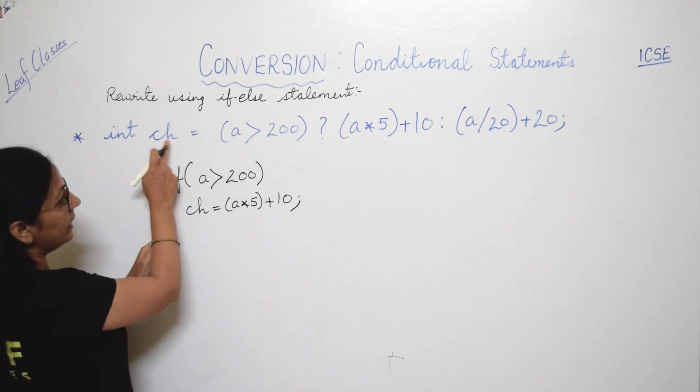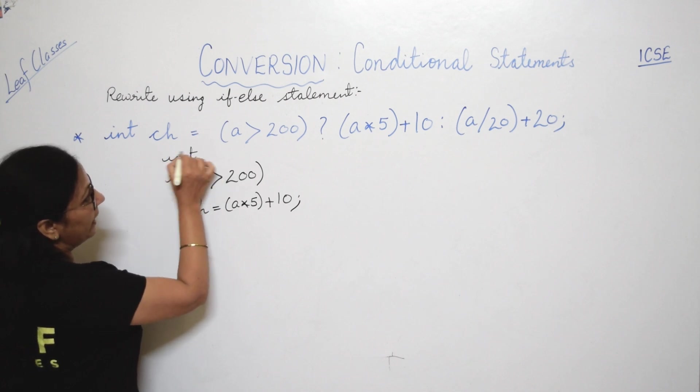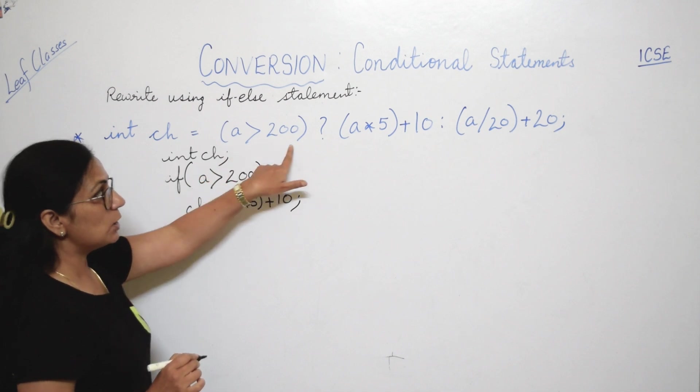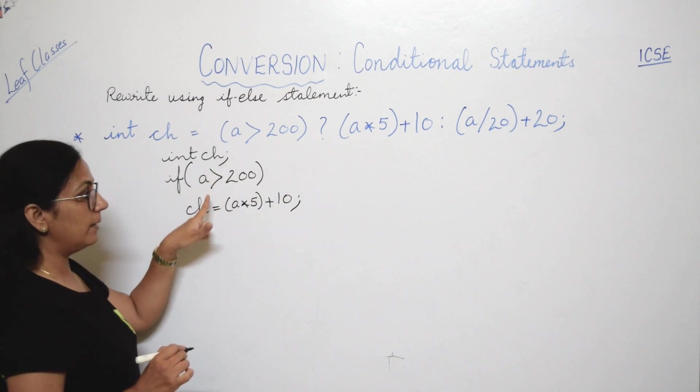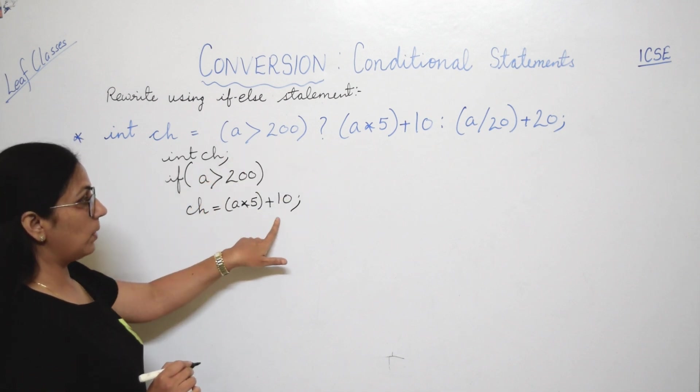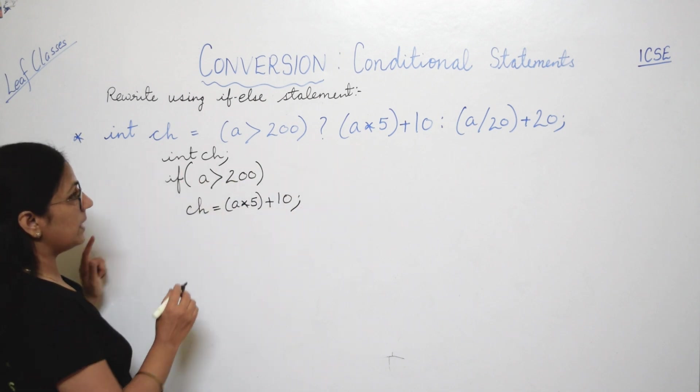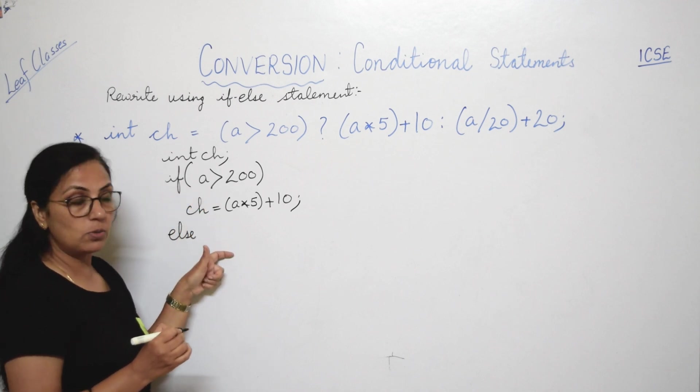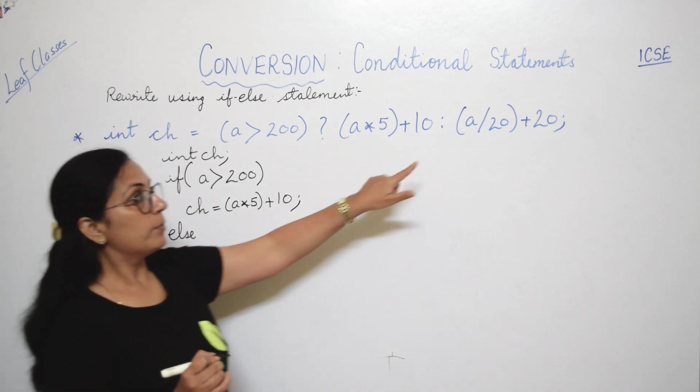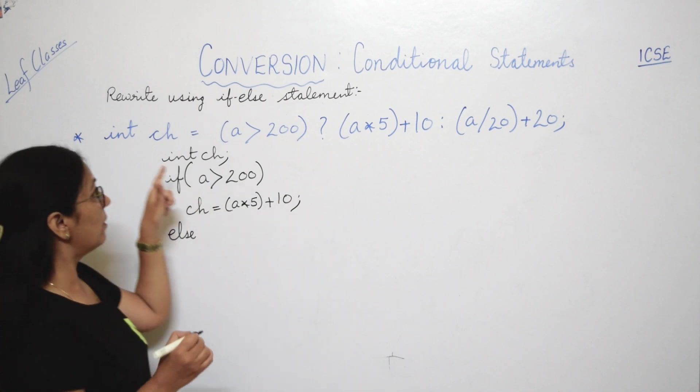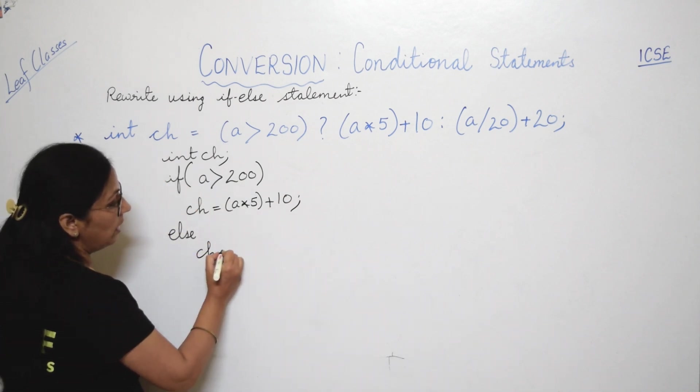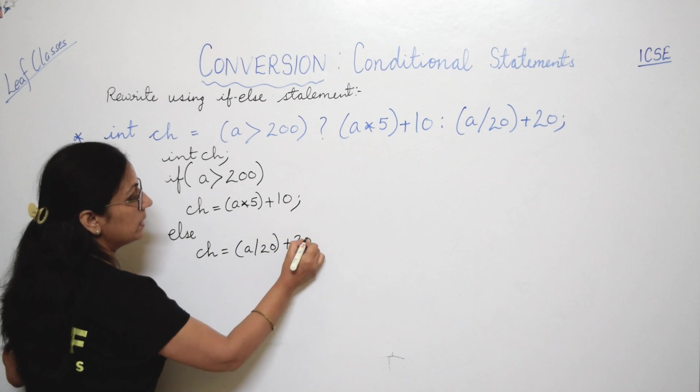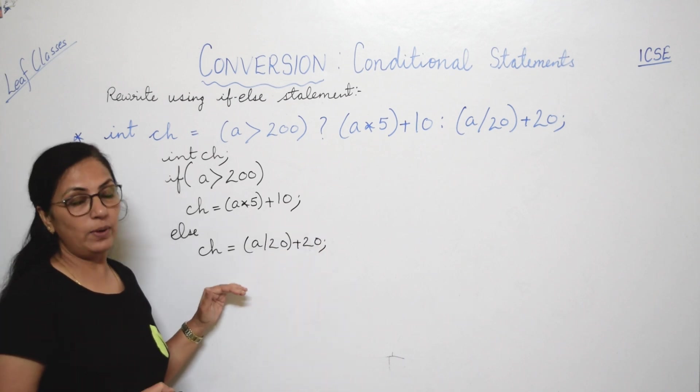Aur yahan par ch hai aur int ch yahan par diya hai. So we will declare it like this: int ch. Phir condition diya. Condition yahan par hai that you will write here. Ab agar yeh condition true hai, toh humko kya karna hai? We have to assign this to variable ch. Else, else mein kab aayega? Jab yeh condition false hogi. Aur agar yeh condition false hai, toh yeh mathematical expression ke value assign hona hai ch variable ko. So here you will write a slash 20 plus 20. That's it. Very simple, very easy. But you need to practice.